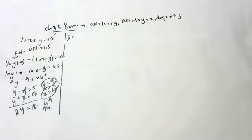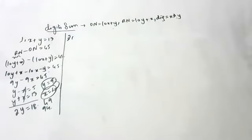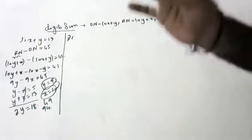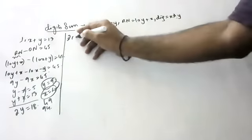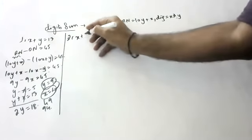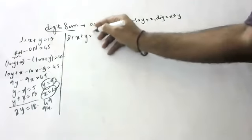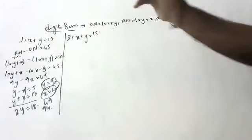Let's do one more question. A number — sum of digits is 15, children. So X plus Y is equal to 15.